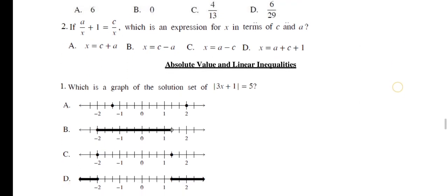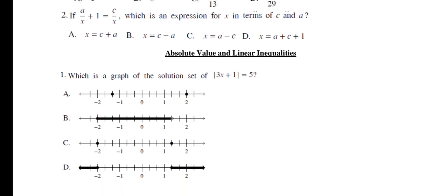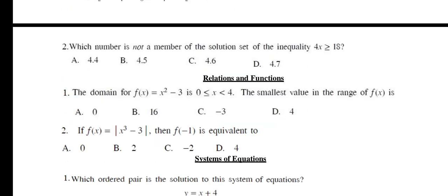Questions from absolute value and linear inequalities. Number 1: Which is a graph of the solution set of 3X plus 1 is equal to 5? The right option is C. Question number 2: Which number is not a member of solution set of inequalities 4X greater than or equal to 18? The right option is B.